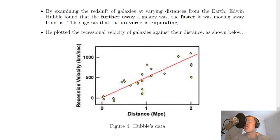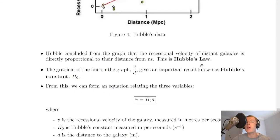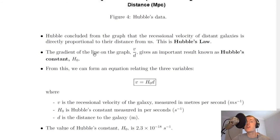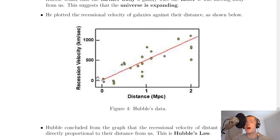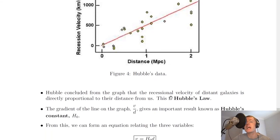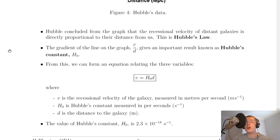Remember that's what recessional velocity means. And that gives us Hubble's law. So another way of saying that is that the further galaxies are away from us the larger their velocity will be. It then says that the gradient of the line on the graph V divided by D so that is your change in Y over your change in X so your V from there divided by your D there gives an important result known as Hubble's constant which is H0.